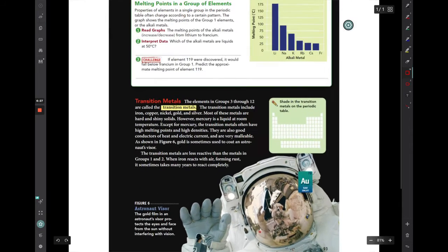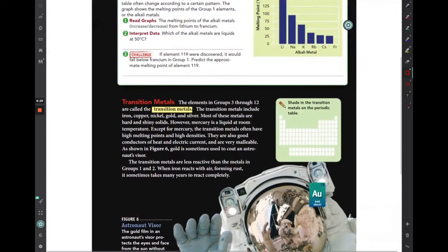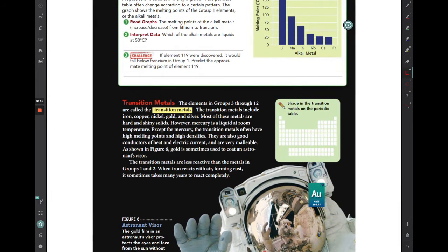Group number 3 through group number 12 are called the transition metals. So now we're actually talking about this group of metals here in the center part of the periodic table. And these are called the transition metals. They are groups 3 through 12 on the periodic table.